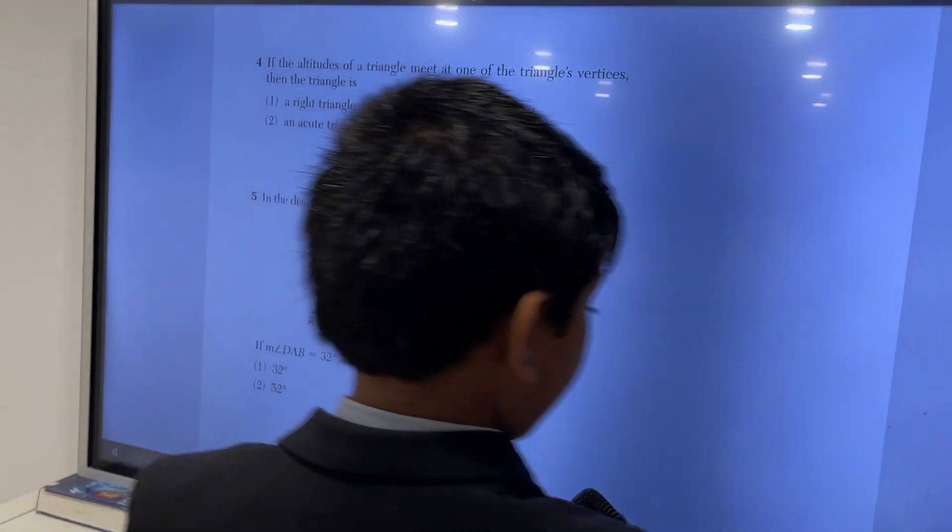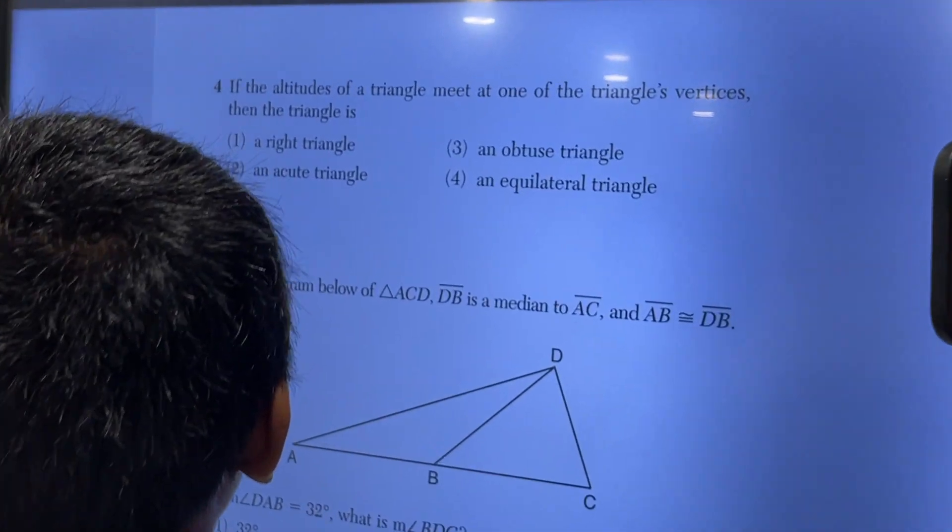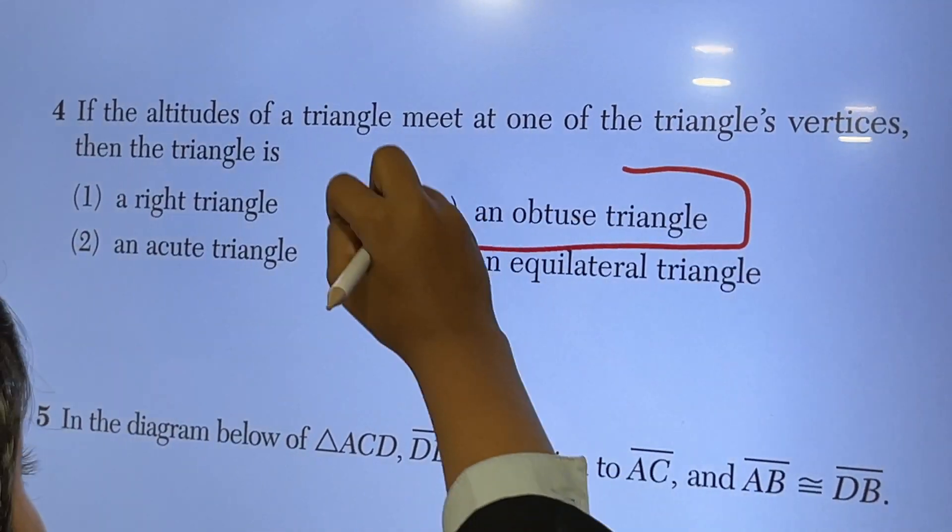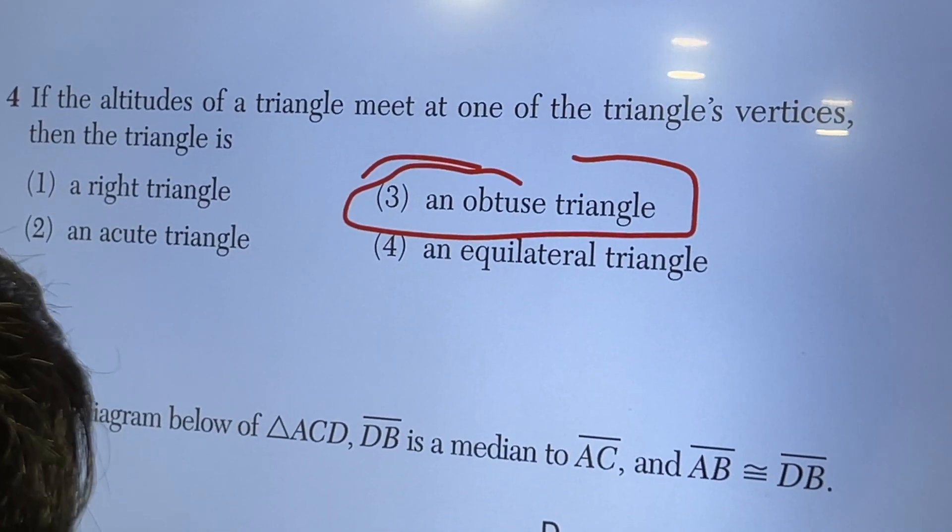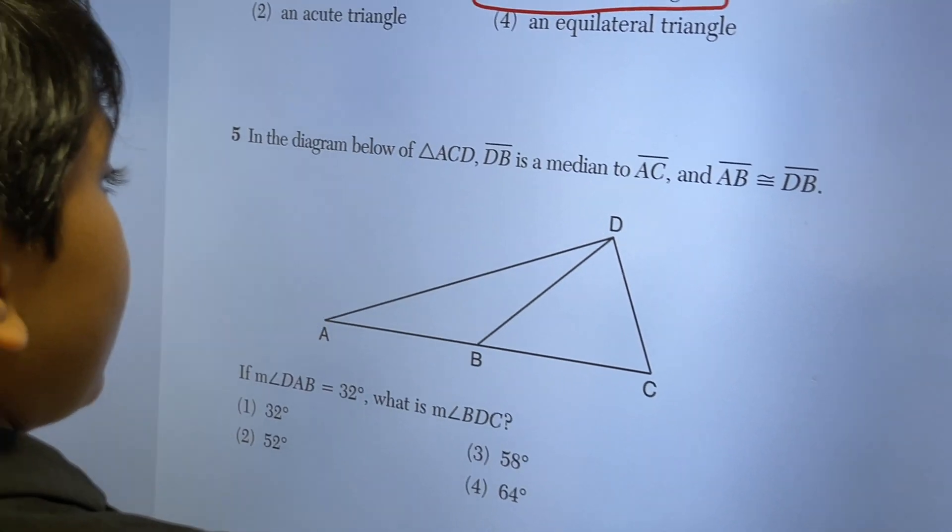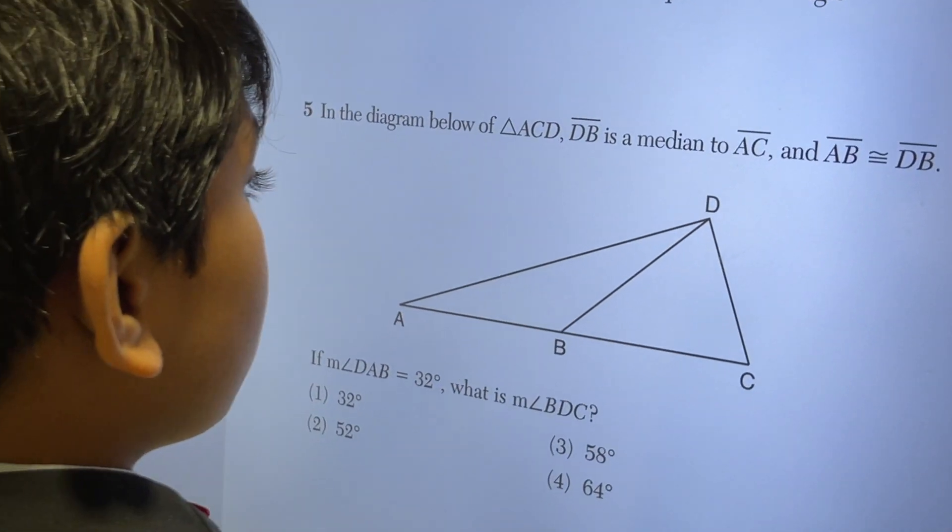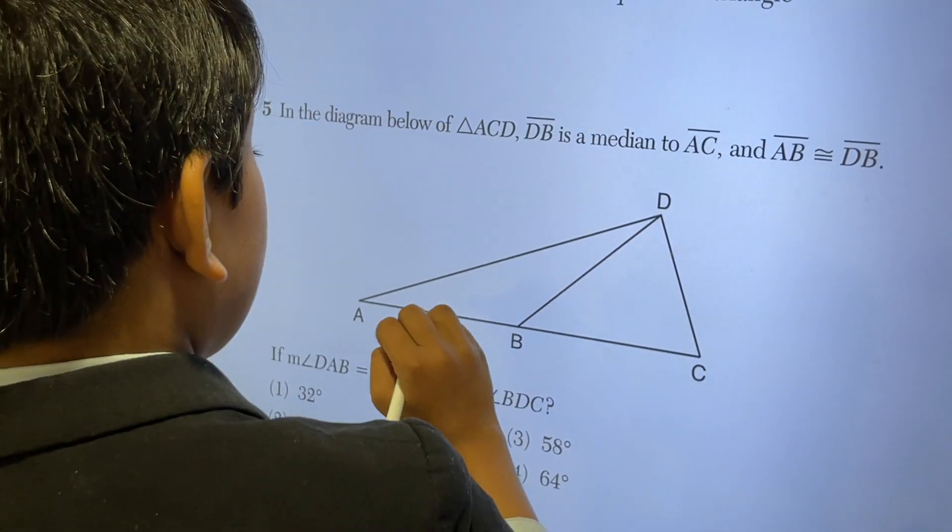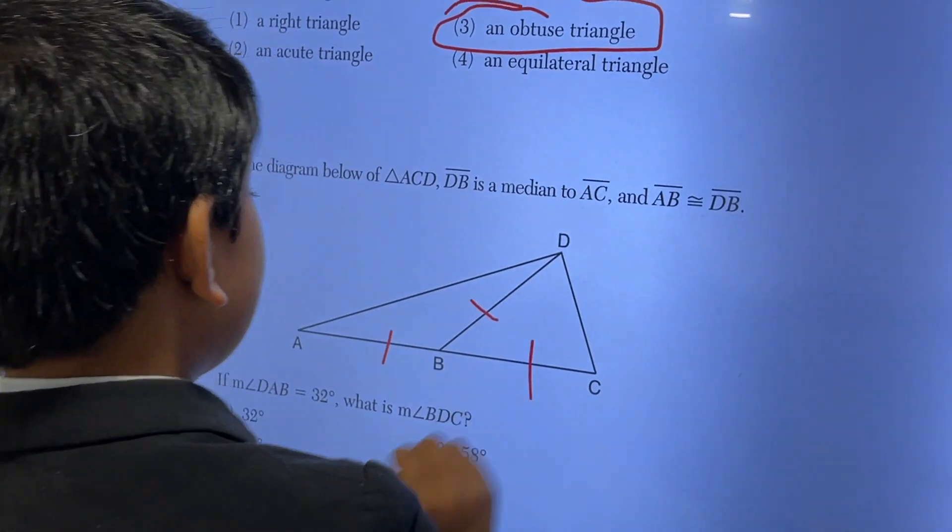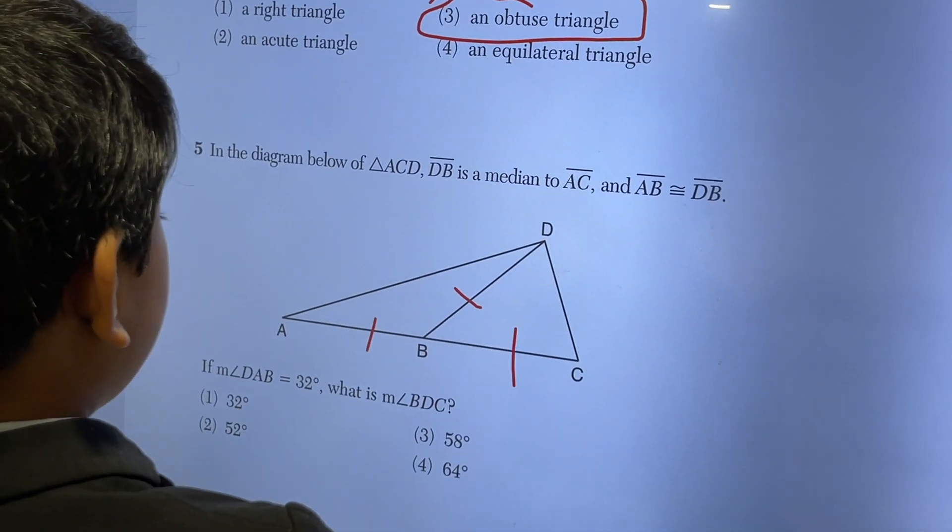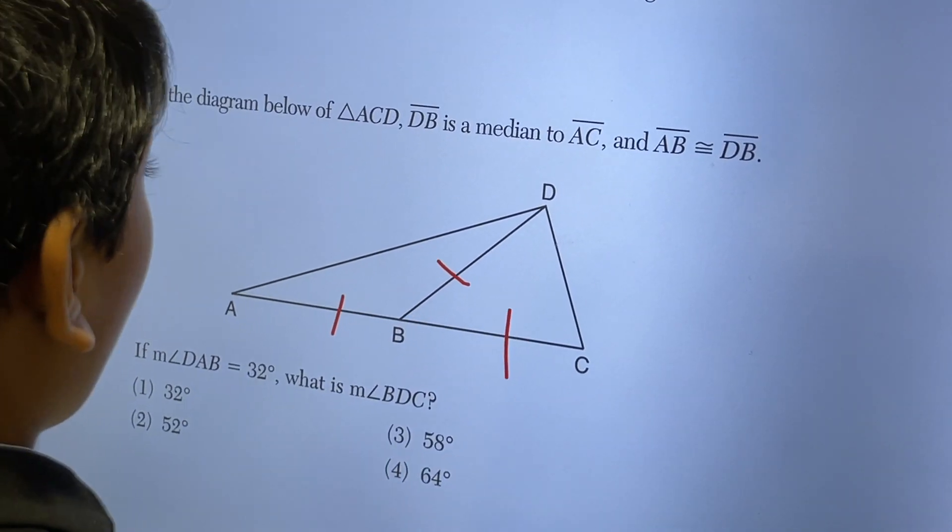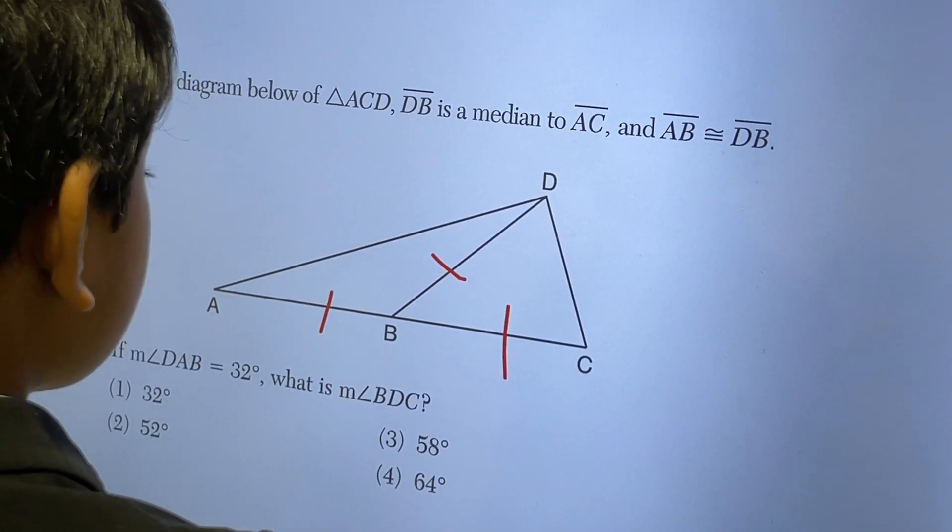4. If the altitudes of a triangle meet at one of the triangle's vertices, then the triangle is an obtuse triangle. In the diagram below of triangle ACD, DB is a median to AC, and AB is congruent to DB. AB is congruent to BC because DB is a median. Thus, that means that DB and BC are congruent.